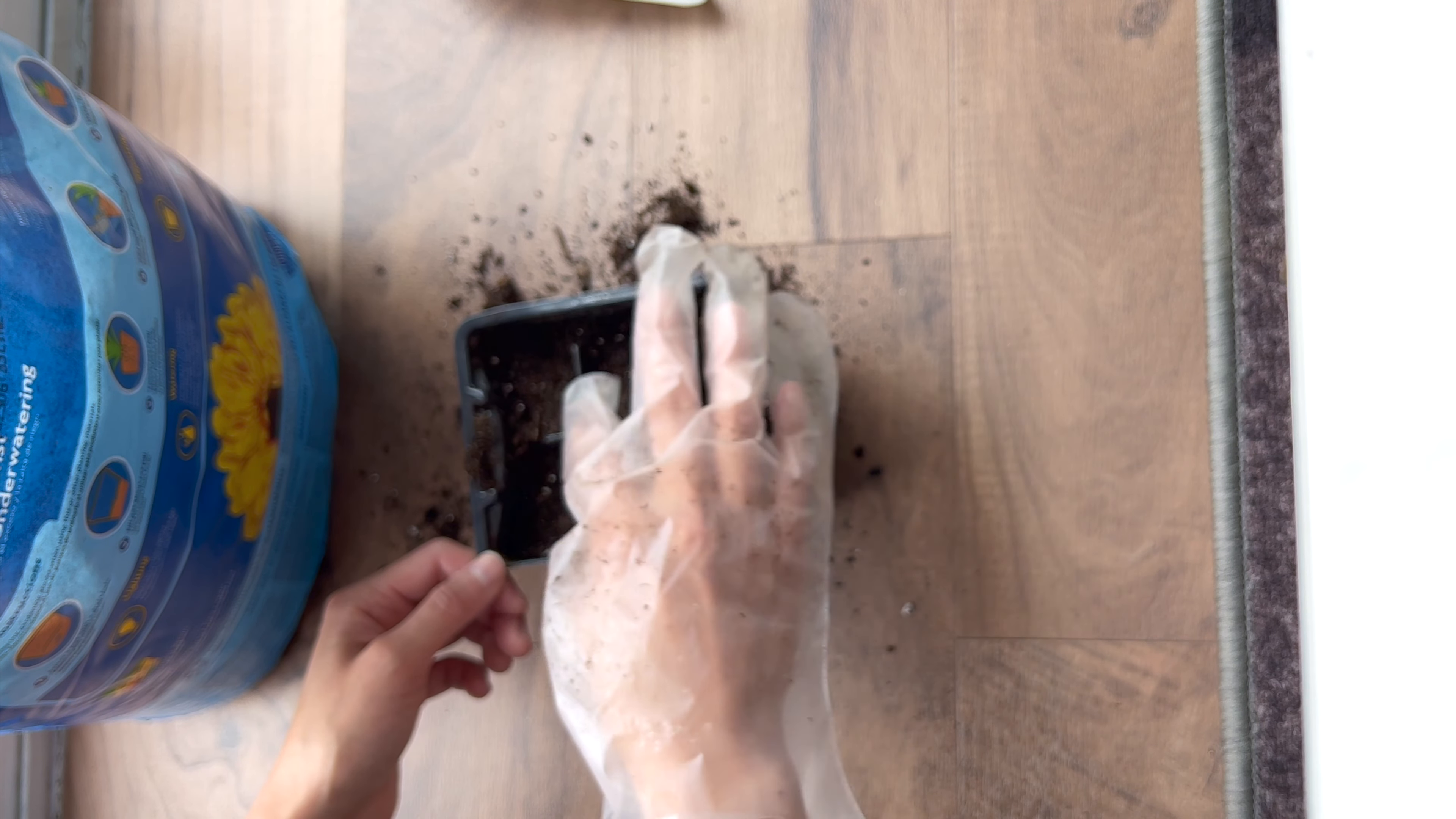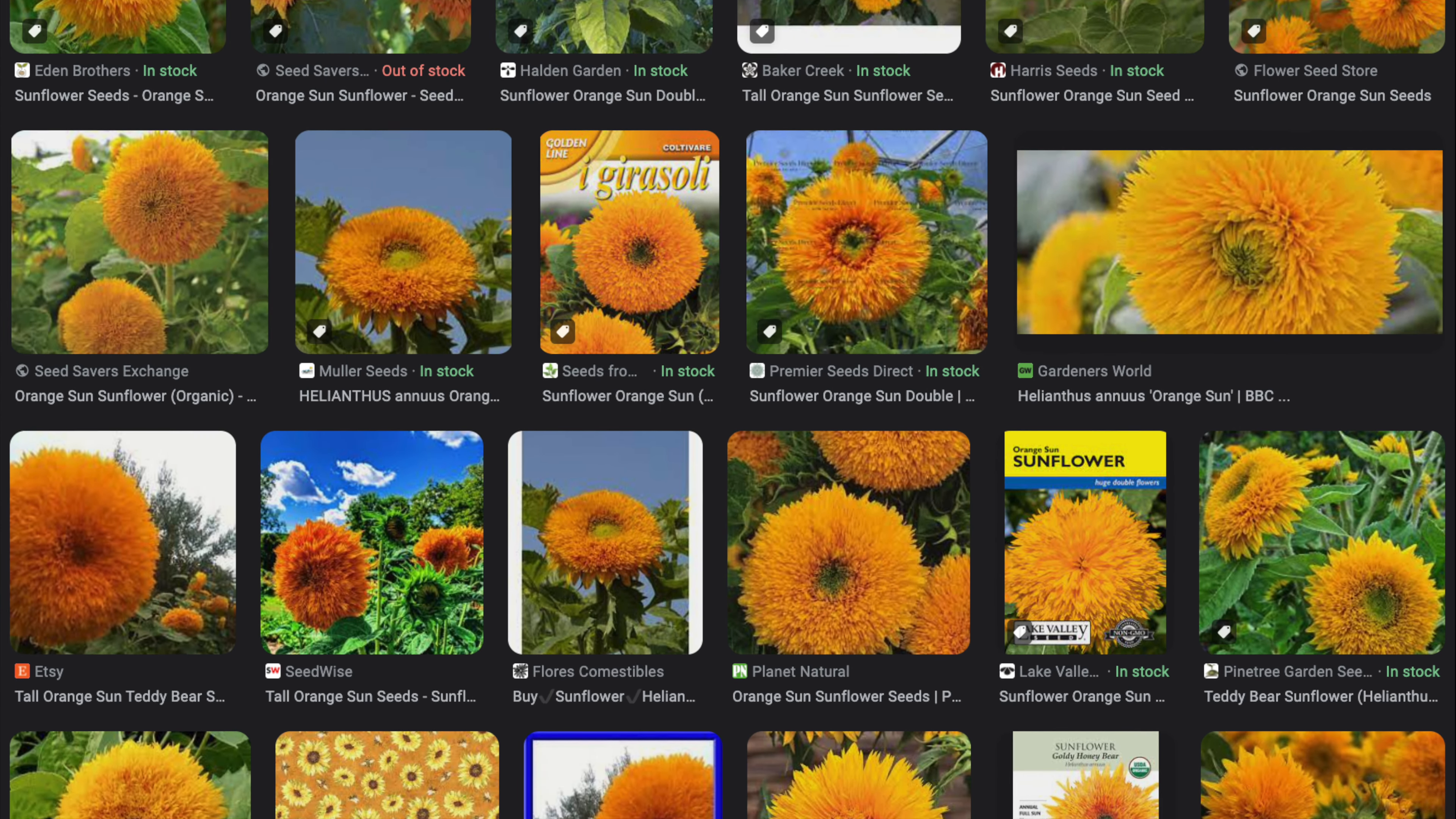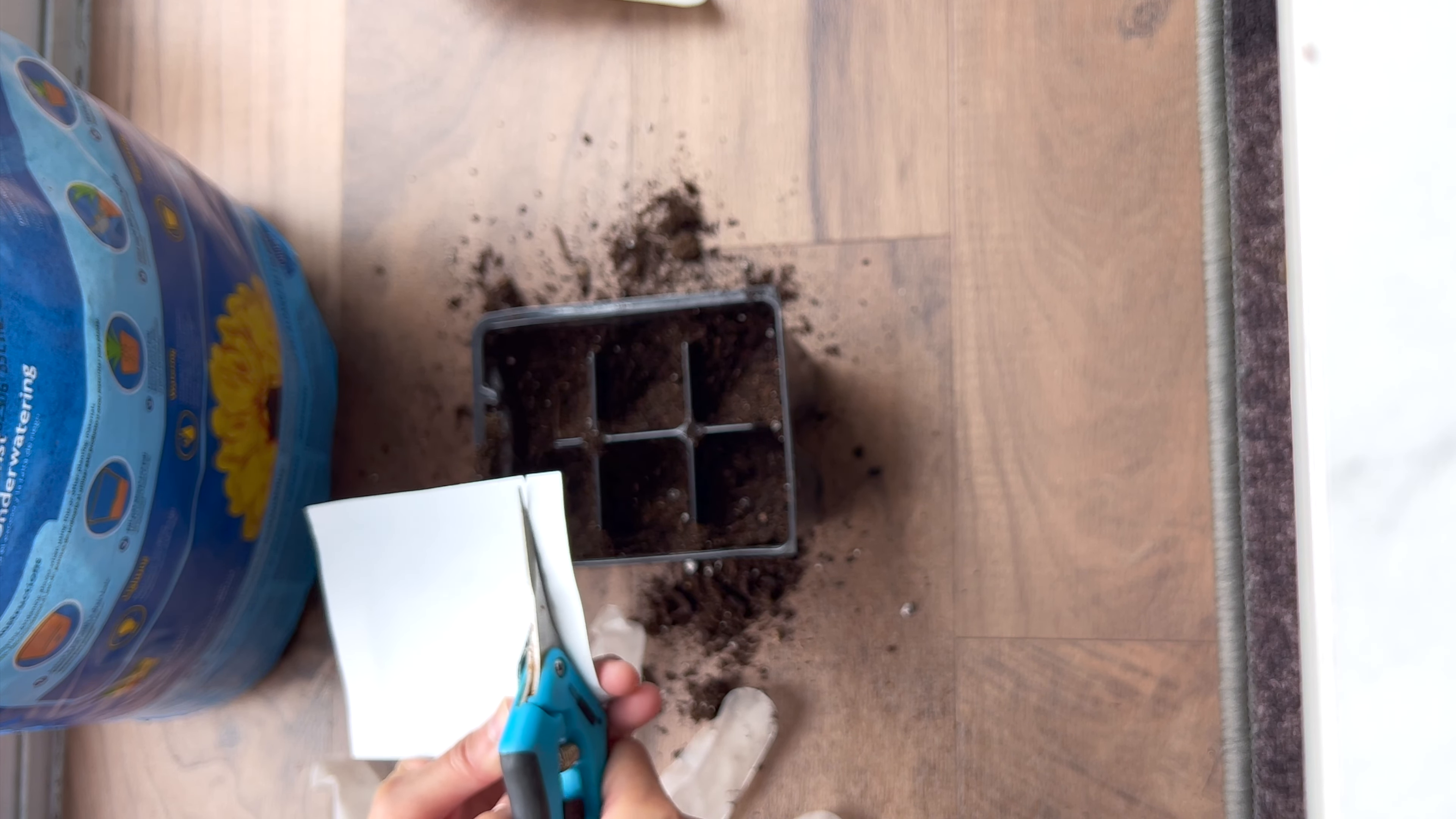These sunflowers are the orange sun sunflowers and the first time I saw them I was so fascinated by their big fluffy yellow blooms.